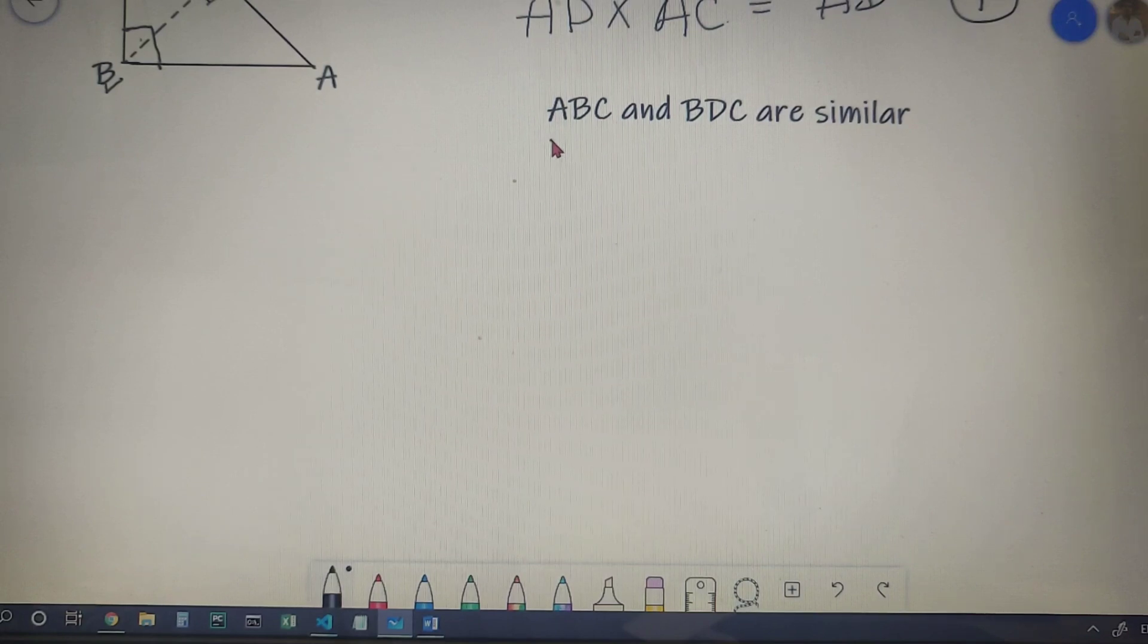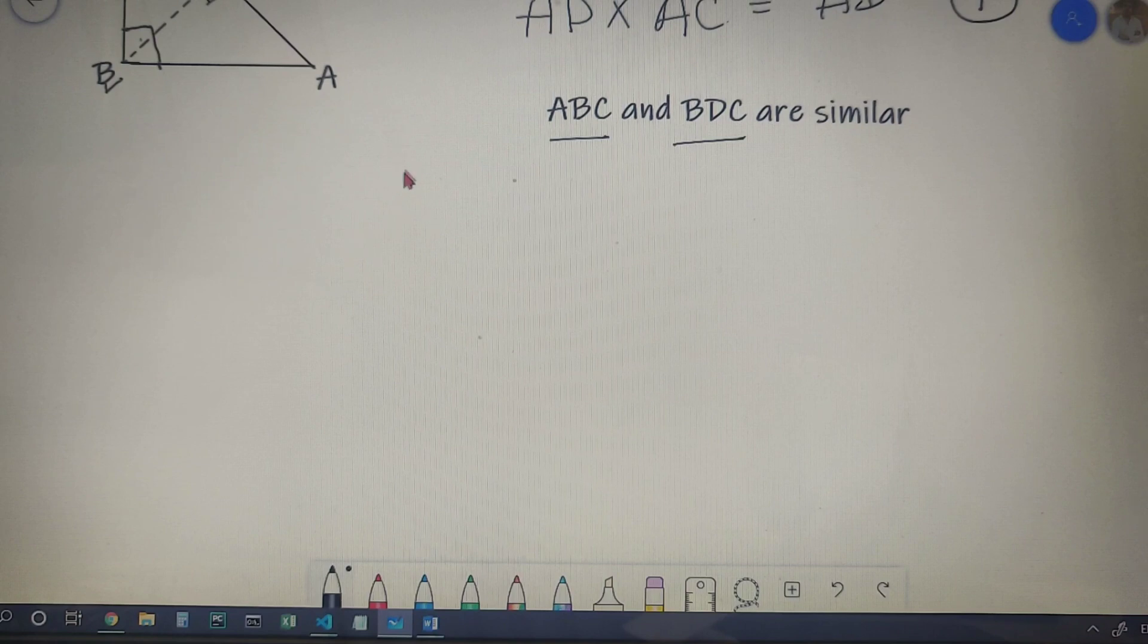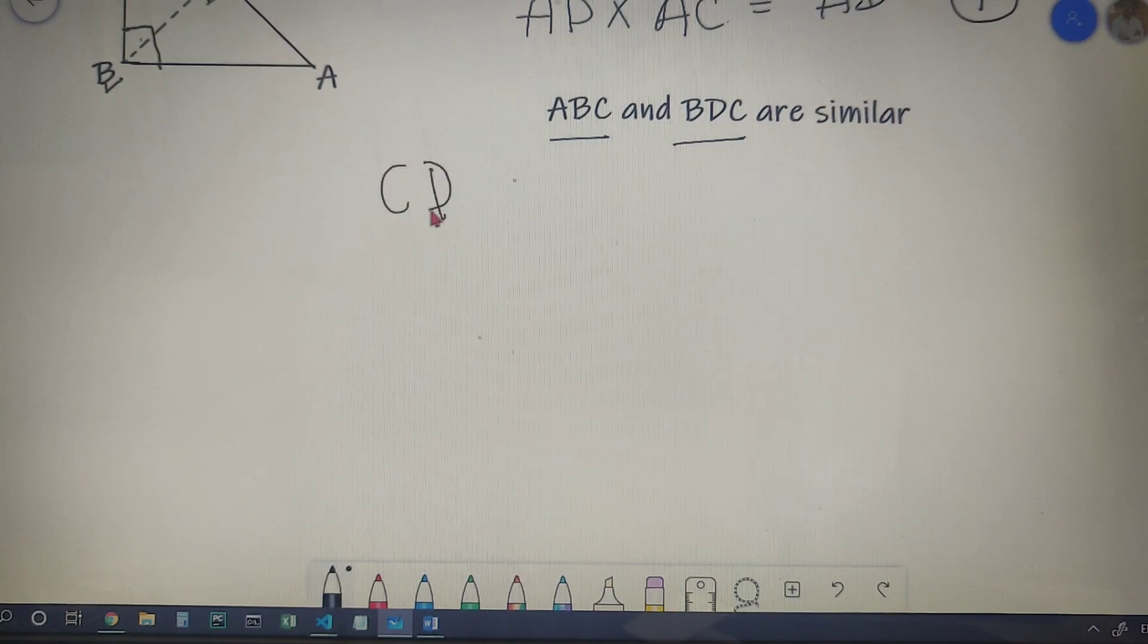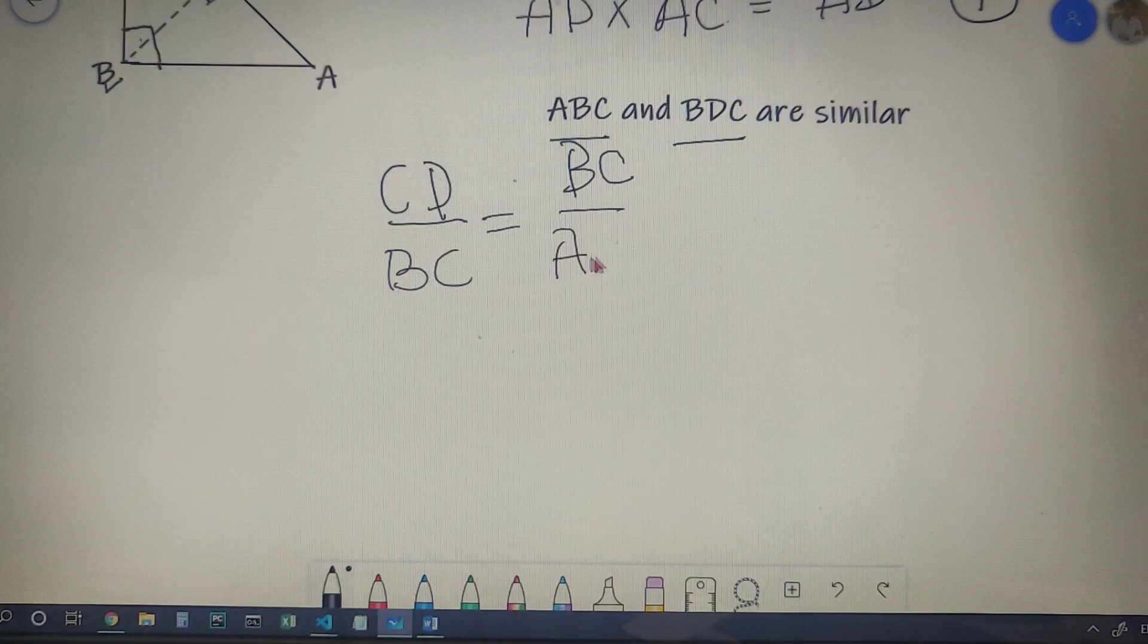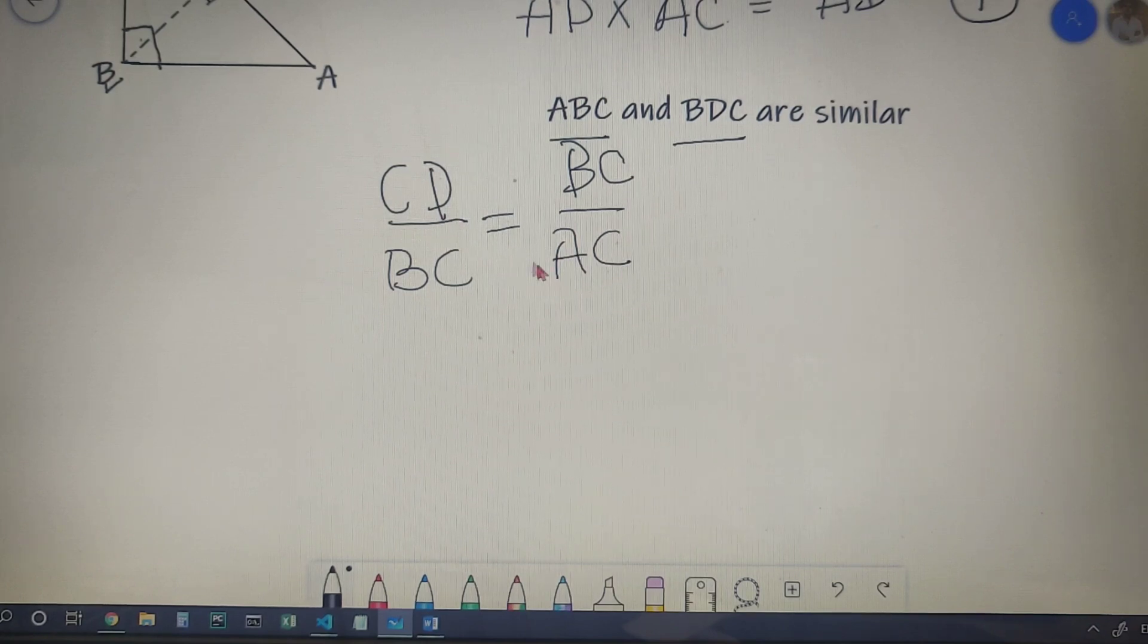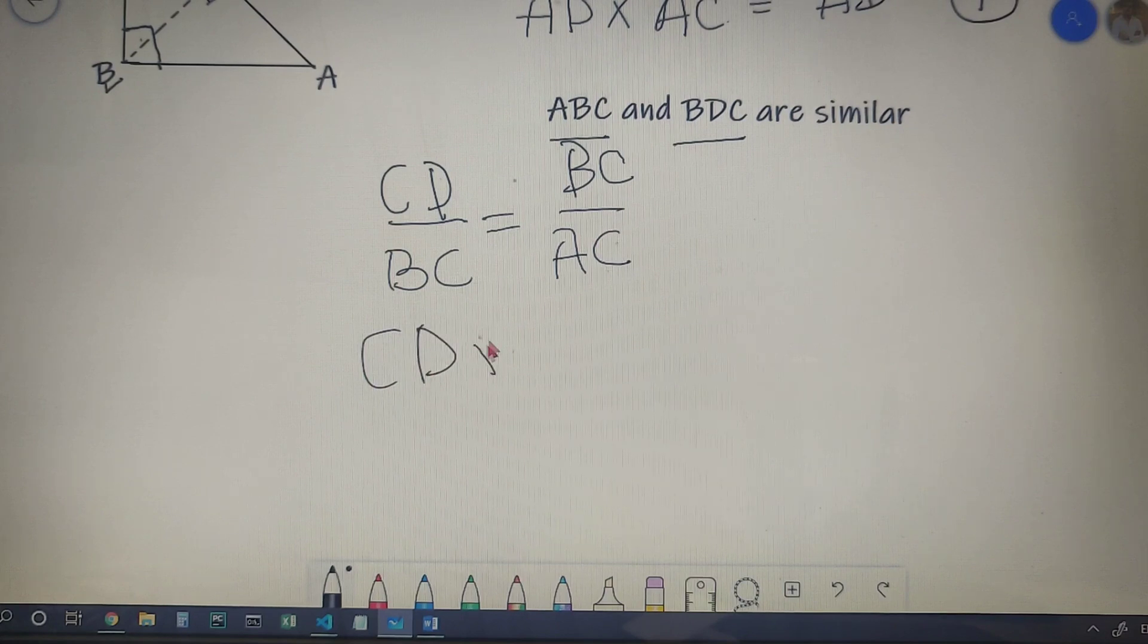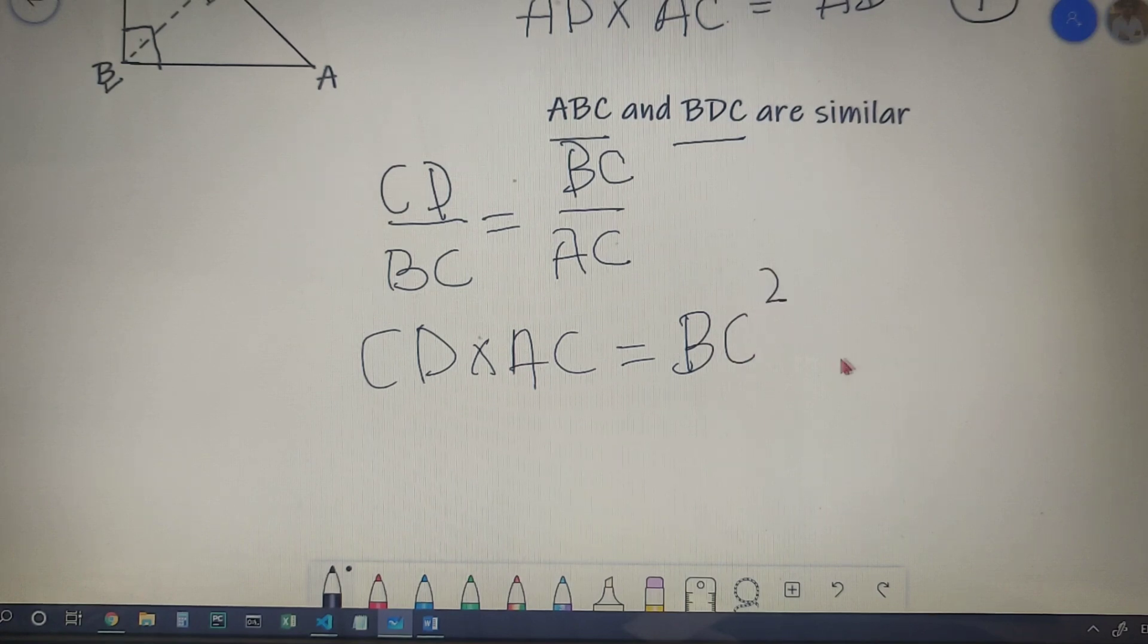Moving to the next part, we also have triangle ABC and triangle BDC similar. So by this, I can write CD by BC is equal to BC by AC. Now again on cross multiplication, we will get that CD into AC is equal to BC square.